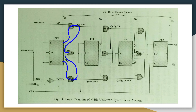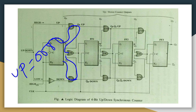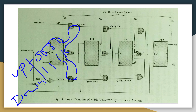For the up counter, it starts giving output from 0000 up to 1111 (which is 15). For the down counter, it is reversed — from 1111 down to 0000. This is the four-bit up-down counter.